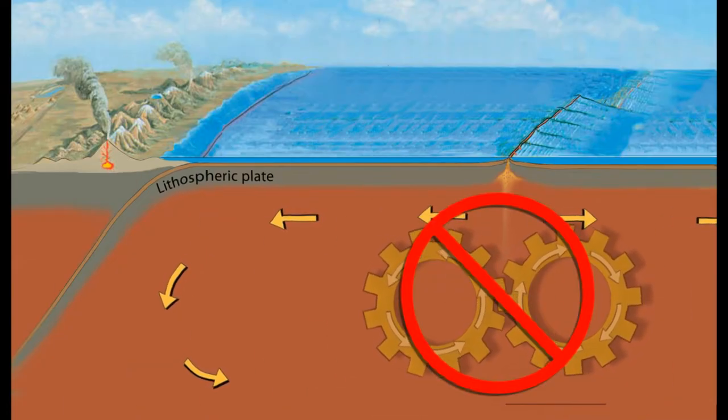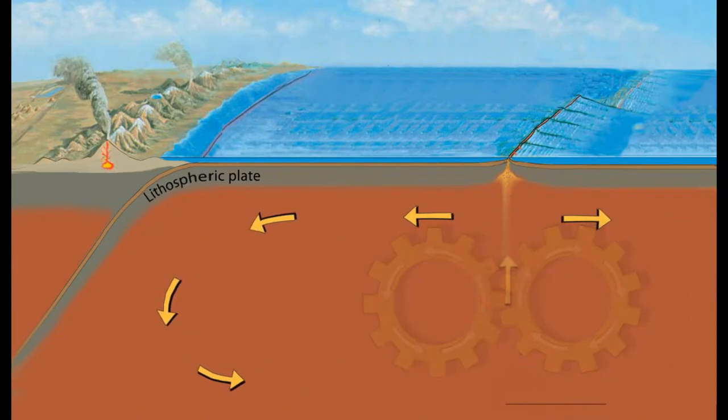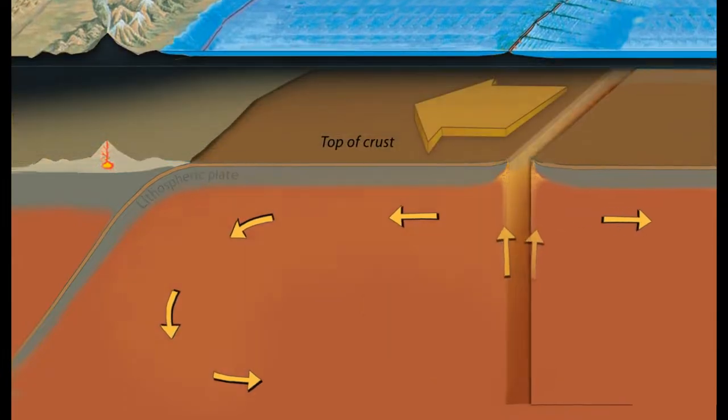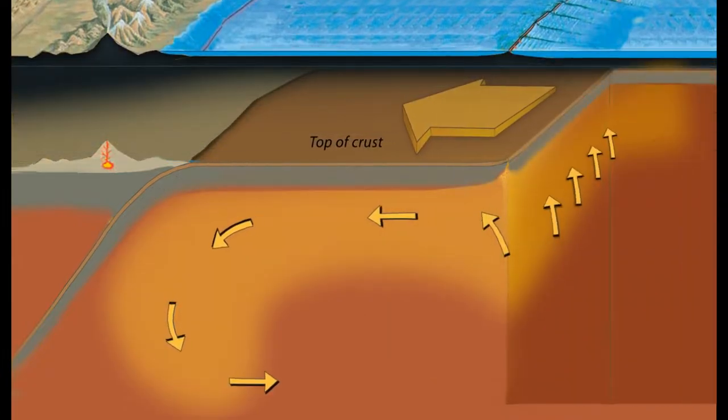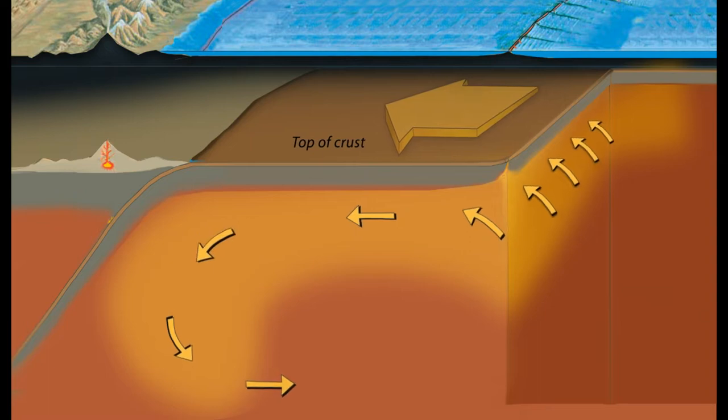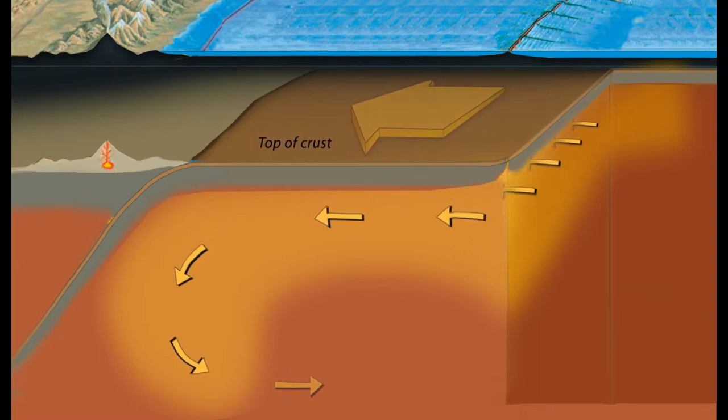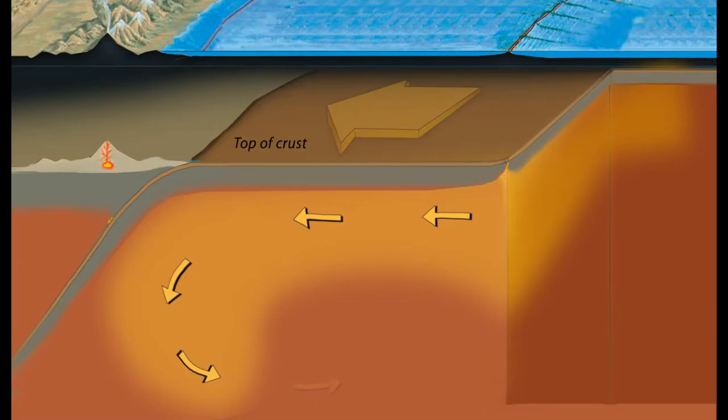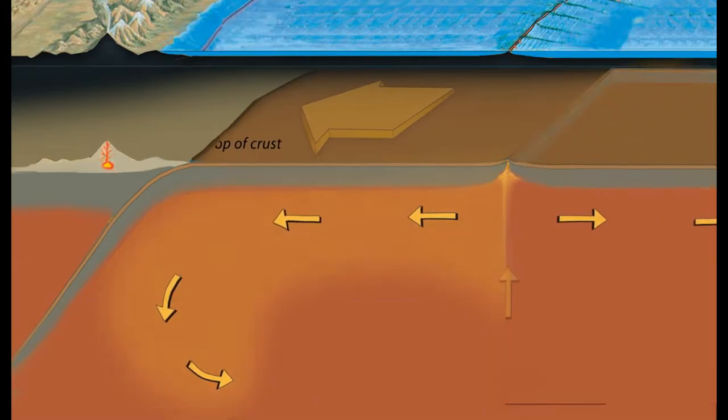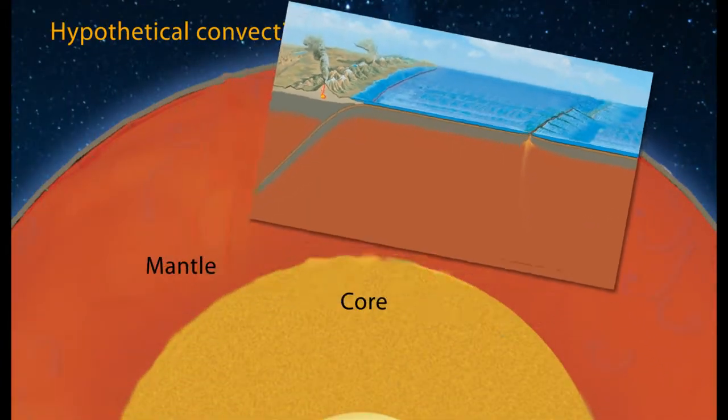However, if we cut away part of our diagram, we can see that the motion of this convection system occurs in three dimensions, over hundreds or even thousands of kilometers in some cases. And this convection system is occurring all over Earth, with many upwelling and downwelling arms of material.